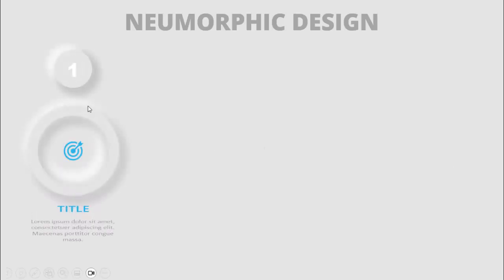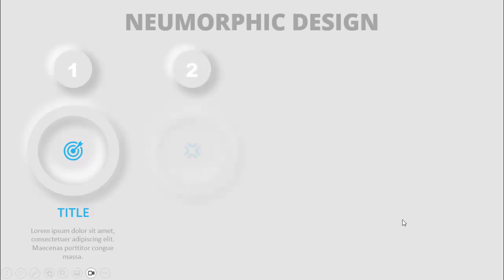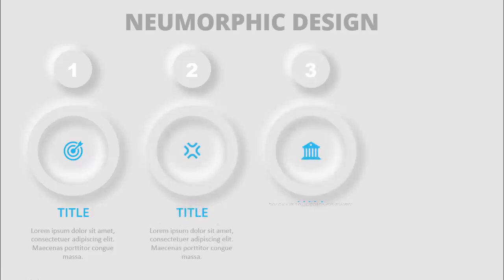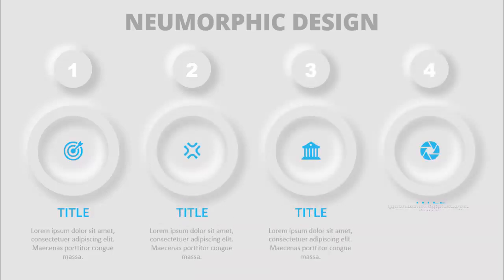In today's tutorial I'm going to show you how to create a neumorphic design slide in PowerPoint. When I click it will show you the first option — with this circle I've added an icon, a title, and detail text. When I click it will reveal the second option, the third option, and the fourth option.